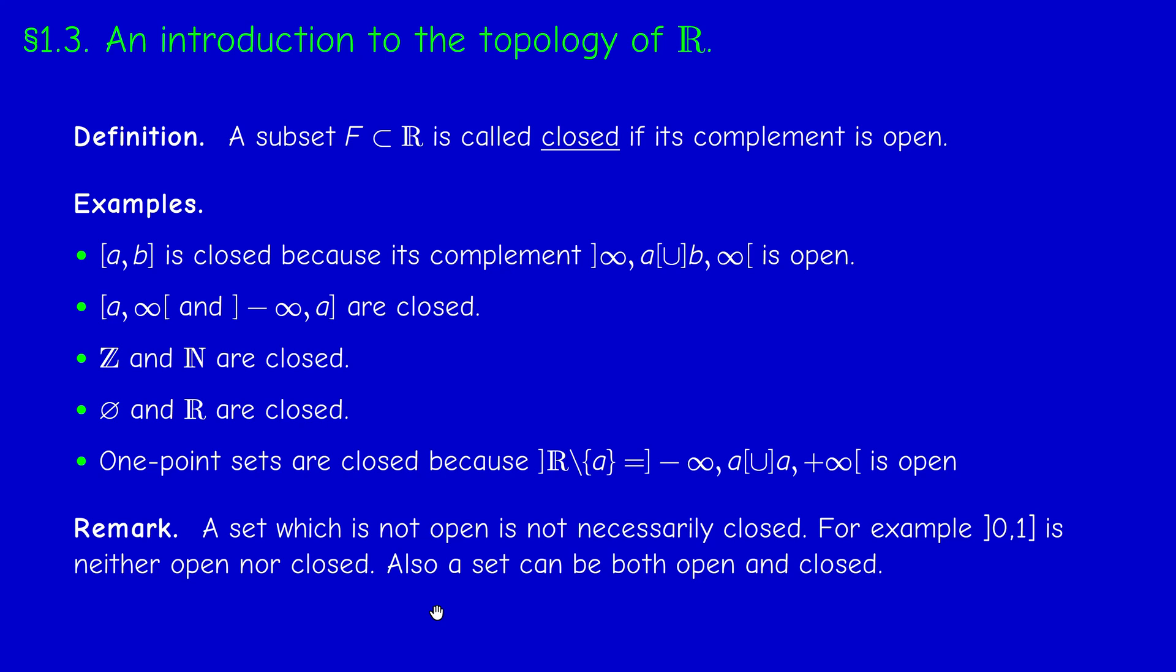Now, we can prove, which I'll prove later next year, that in R, these are the only closed and open subsets at the same time. We call them clopen, if you like. So in R, these two, empty set and R, are the only clopen subsets of R. But this is not trivial.